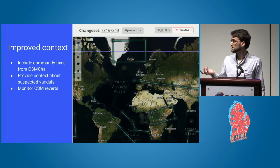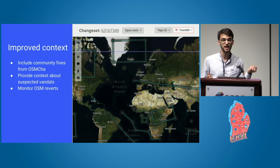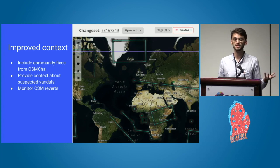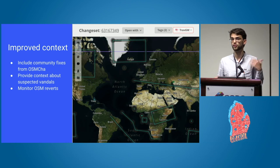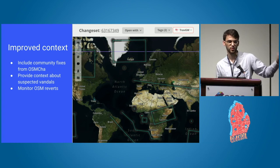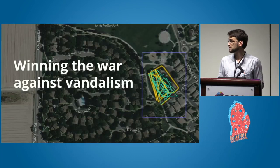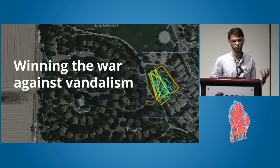We also added improved context for analysts. If someone in the community flags something as bad in OSM.cha, you'll see that now in the review tool. We regularly look through the fixes of the OSM community and sift through reverts to see if there was something bad in the past that's not yet fixed, or something bad that made it into our map.